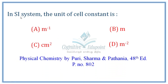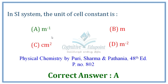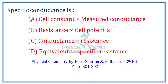Next question: in the SI system, the unit of cell constant — cell constant is defined as length divided by cross-sectional area, so the unit is meter per square meter, which simplifies to meter inverse (per meter). The cell constant multiplied by the measured conductance gives the specific conductance, which can be ionic or electrolytic conductance. Correct answer A.